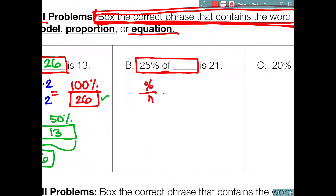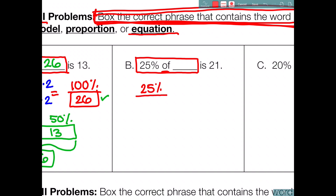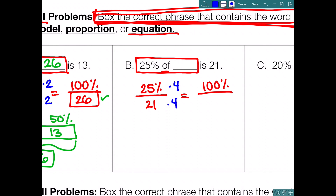The proportion looks like: percent over number equals percent over number. Rereading: 25% of blank is 21. Write down: 25% is 21. But they don't want what 25% is — they want what 100% is. How many times does 25% fit into 100%? It fits 4 times. Times 4 in the numerator, times 4 in the denominator: 25% times 4 equals 100%, 21 times 4 equals 84. So our final answer is 84. 25% of 84 is 21.